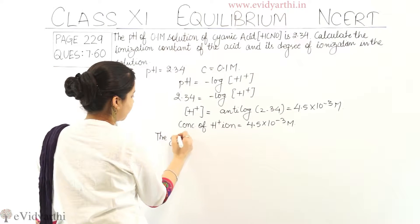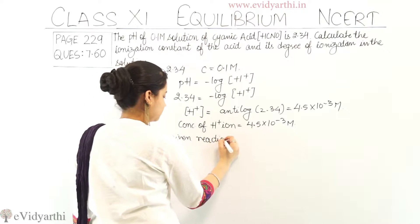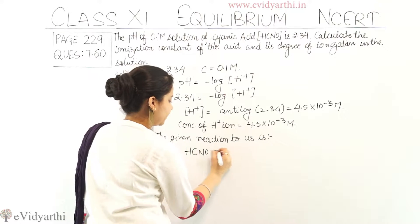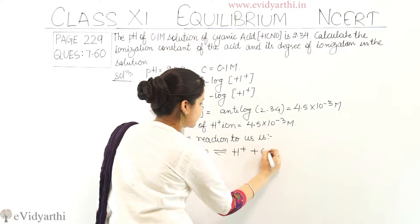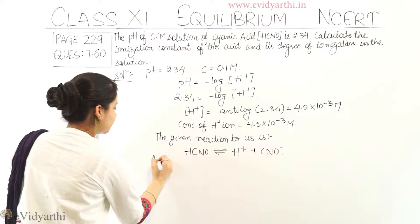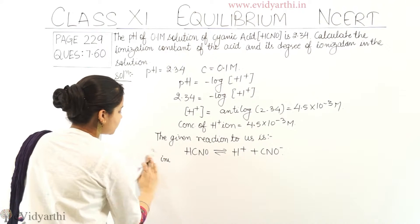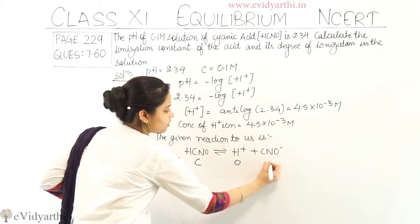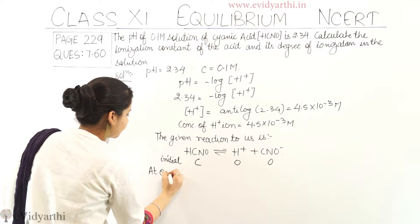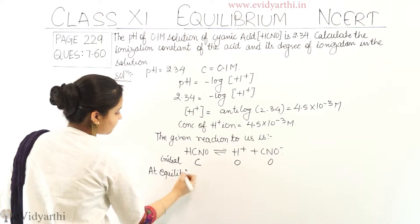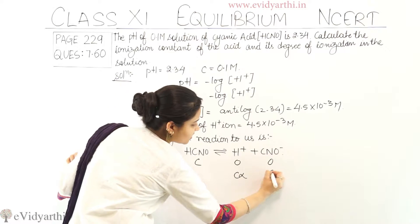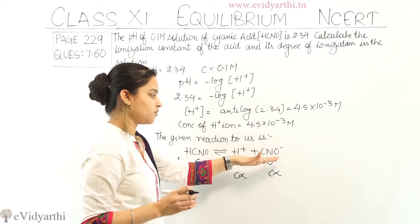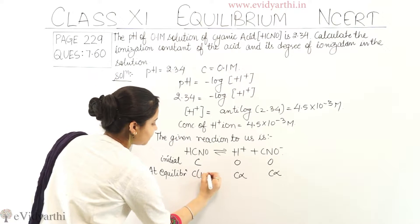The given reaction is: cyanic acid HCNO in equilibrium with H⁺ plus CNO⁻. At initial concentration, suppose initial concentration of HCNO is C, and it is 0 and 0 for the products. At equilibrium, the concentrations are C(1−α), Cα, and Cα respectively, where α is the degree of ionization.